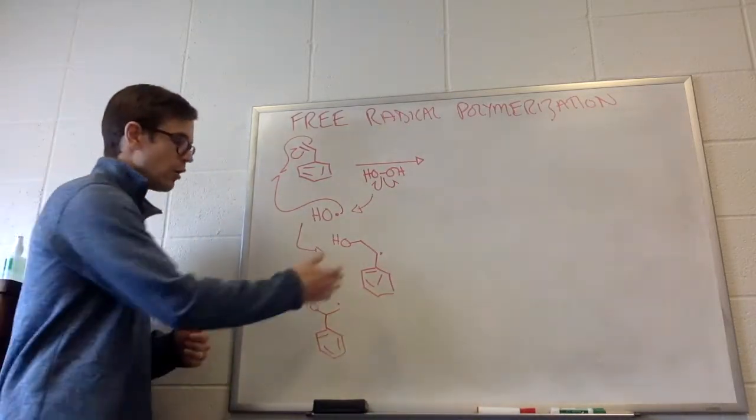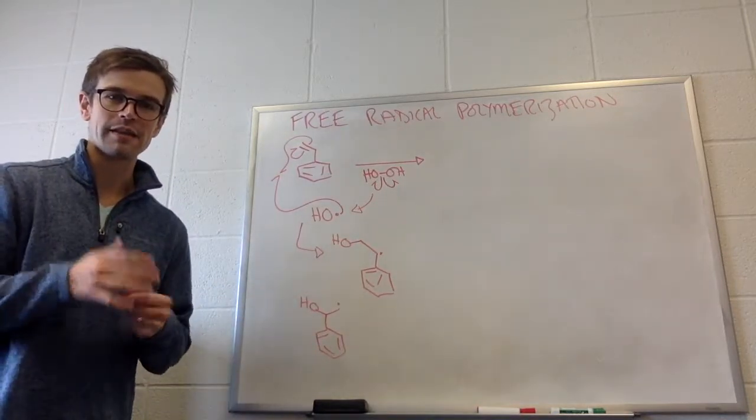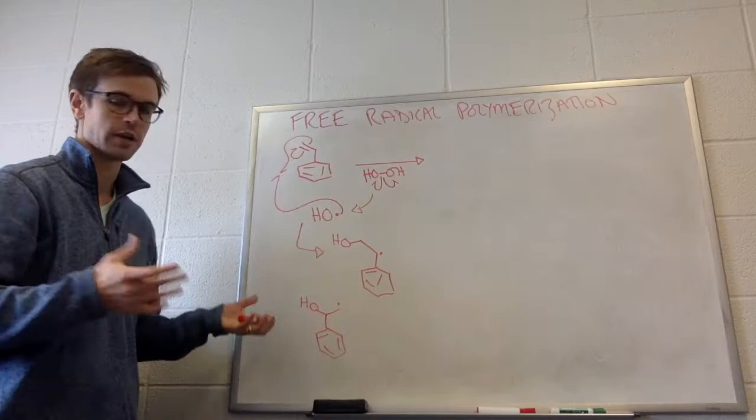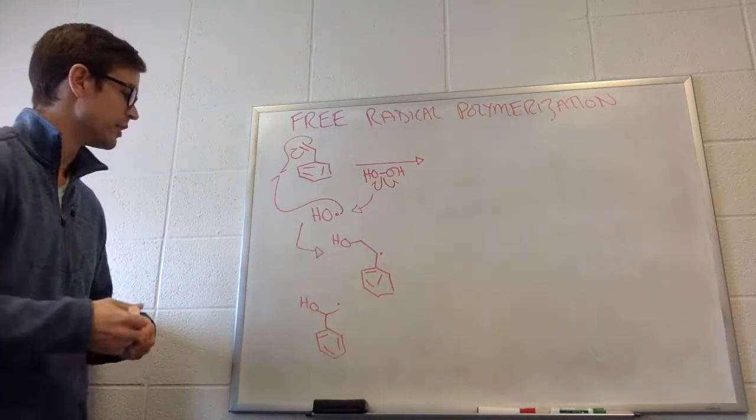So here we have the radical in this position. Here we have it in this position. So take a minute, think about which one is going to be more likely to form. This is something that at this point in the chapter you should be able to predict pretty easily. Pause it, mark it, and come back when you've made your decision.